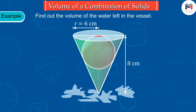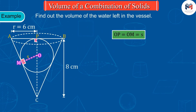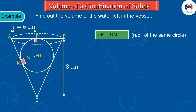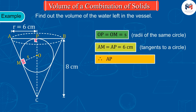Let's draw a figure for the given situation, in which we represent the cone by a triangle and the sphere by a circle. The values of OP and OM are equal since they are the radii of the same circle. Also, AM and AP will be equal because AM and AP are tangents to the circle from an external point A.